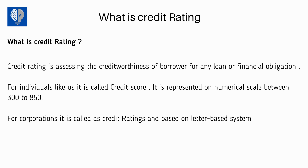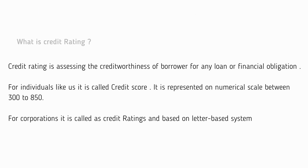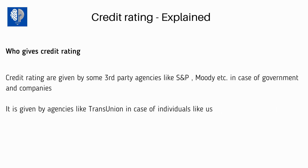Whenever you see some news, you will find the credit rating of an organization is always expressed as triple A or AA plus. There are different agencies which use different nomenclature, but it is called credit rating. Whether it is for organizations or individuals, credit rating is given by third-party agencies. Third-party agencies for companies and governments are like S&P and Moody's. In case of individuals, it is agencies like TransUnion.